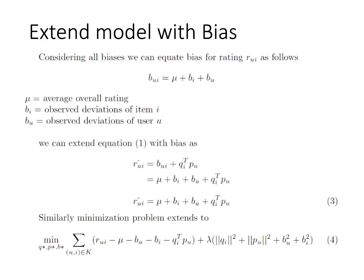The model is further improved by adding bias. There are biases towards items and from users. Here, mu represents the average overall rating, and b_i and b_u represent the deviation for item i and user u respectively. Adding all bias values to the previous model gives the new model.